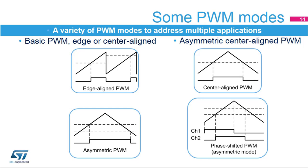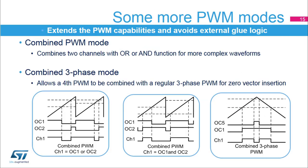Asymmetric PWM also allows the generation of phase shifted PWM signals necessary to drive DC-to-DC converters based on the full bridge phase shifted topology. In this case, the timer provides two PWM signals with identical frequency, 50% duty cycle, and a phase shift varying from 0 to 180 degrees. The combined PWM mode allows a logic combination of two PWM signals generated by adjacent channels, output compare 1 and 2 or output compare 3 and 4. The PWMs can be ORed or ANDed to create complex waveforms.